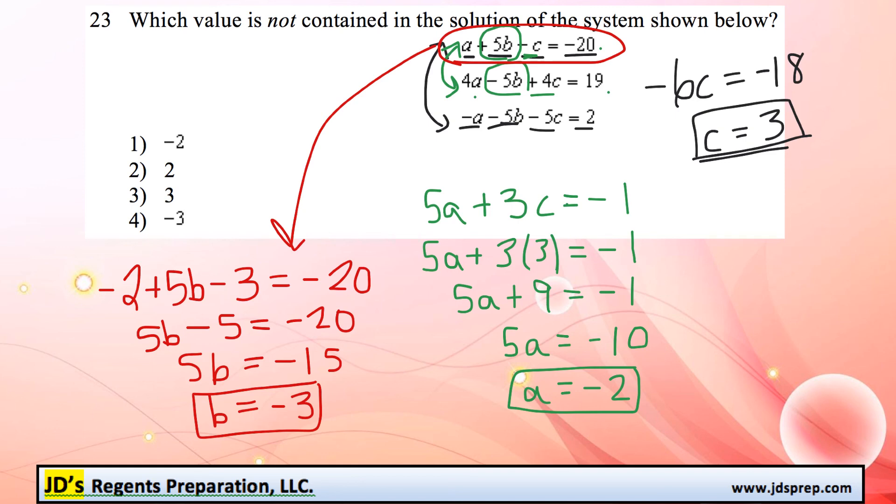So of the three solutions we have, we have a negative 2, we have a 3, a negative 3. But 2 is not part of the solution, so that is our answer.